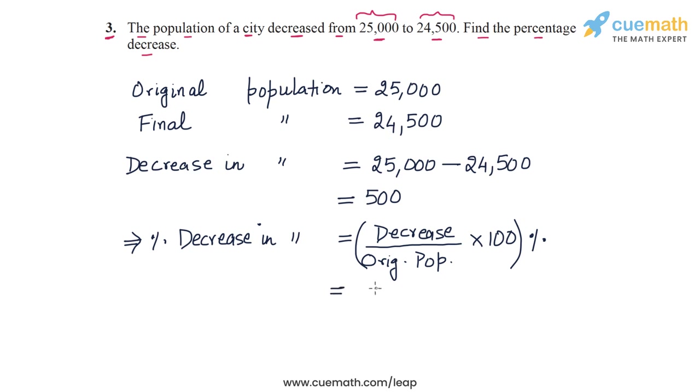Let's plug in the values. The decrease is 500, the original population is 25,000, and we multiply this by 100. This is the percentage that we will get.